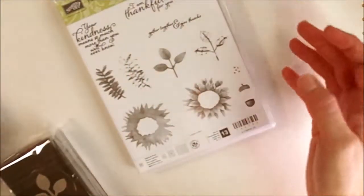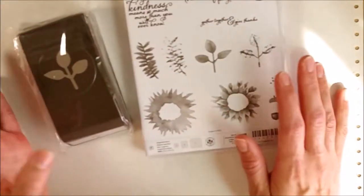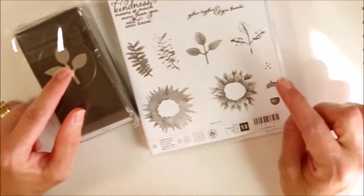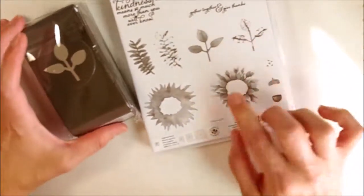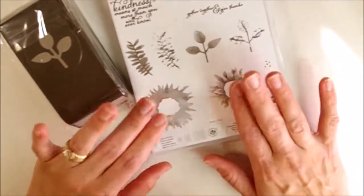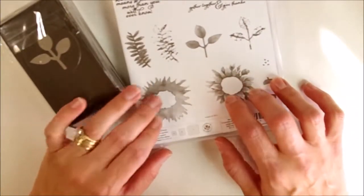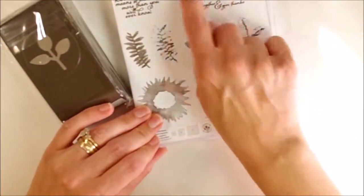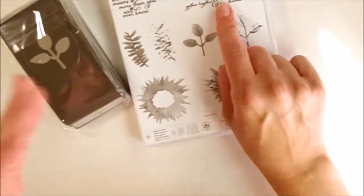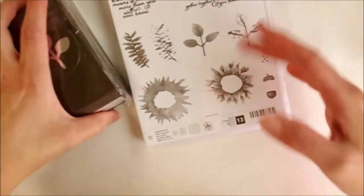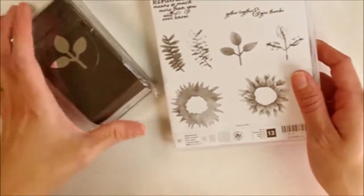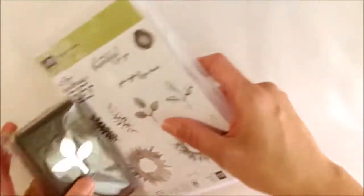This one is a bundle. You can get this separately or as a bundle. I went ahead and got the bundle. You get the punch for the leaves there, and they have it in a sunflower kind of look. I loved the thankful sentiments so you can make Thanksgiving holiday cards. I can't wait to get using that one.